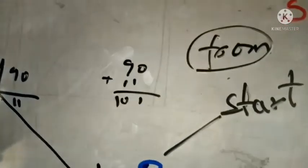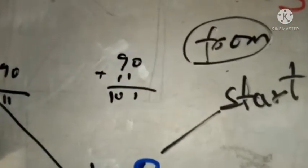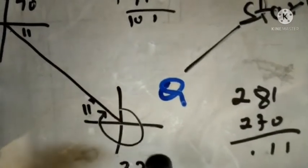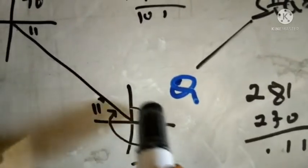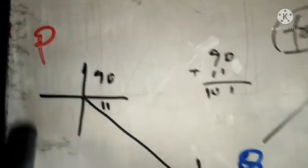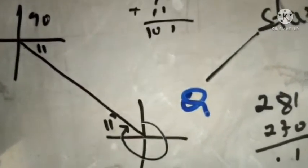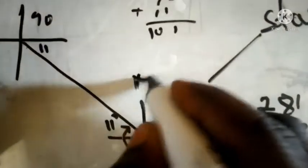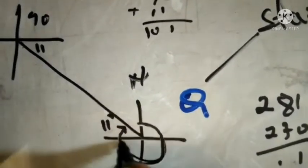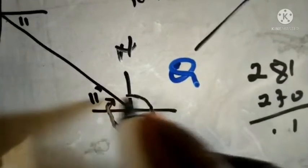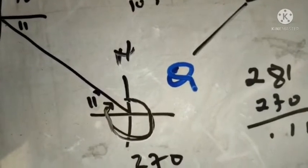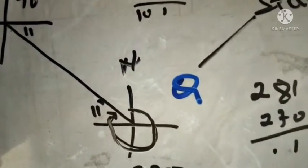The question says the bearing of P from Q is 281 degrees. A bearing is a direction in terms of angle. You are giving a friend a direction to go to a place. That direction is 281 degrees, and you are taking the measurement from the north — from north all the way around to that direction.